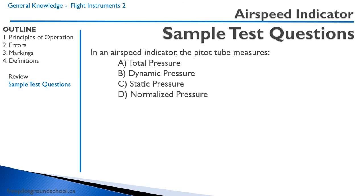Here's our first sample test question: In an airspeed indicator, the pitot tube measures — A, total pressure; B, dynamic pressure; C, static pressure; or D, normalized pressure? Recall that the pitot tube measures total pressure. When we subtract total pressure minus static pressure, we end up with dynamic pressure, which is what the airspeed indicator indicates — but the pitot tube itself measures total pressure.